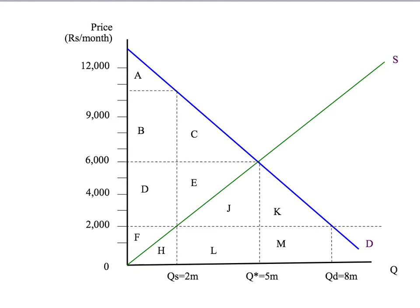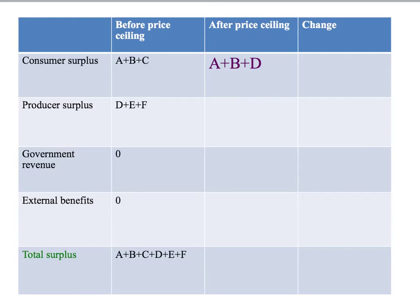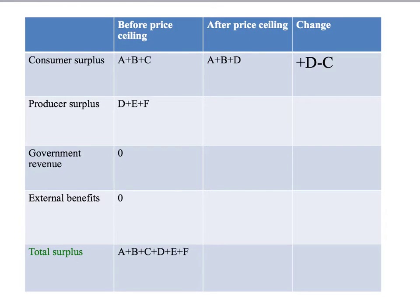Now with the price ceiling of 2,000 rupees in place, the price is 2,000 and only 2 million dwellings are transacted. Consumer surplus is the area under the demand curve above the price up to the quantity rented: area A plus B plus D. The change in consumer surplus is plus D minus C — consumers have gained area D but lost area C.